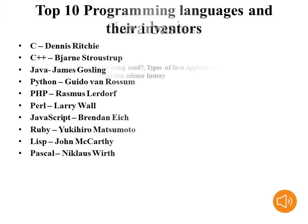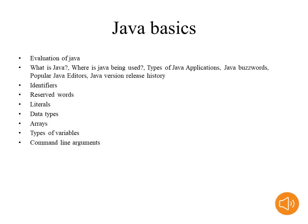Now we will see the basics of Java and Python. In this slide I mention the basics of Java, and in the next slide the basics of Python. Compared to Python, Java basics are a smaller set but are in-depth and somewhat tough. We start with the evaluation of Java, what Java means, where it is used, and its applications. Java buzzwords are included in this presentation, as well as popular Java editors, version release history, identifiers, reserved words, literals, data types, array types, variables, and command-line arguments.